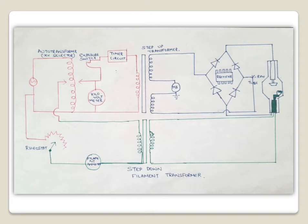It is the primary circuit that provides the power supply for both the secondary as well as the filament circuit. The auto transformer present in the primary circuit is the source of power for both the secondary and the filament circuit.